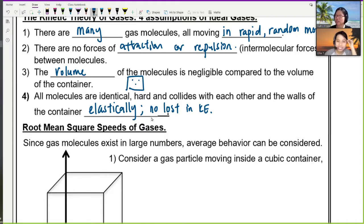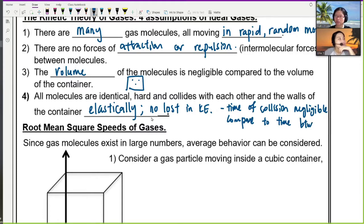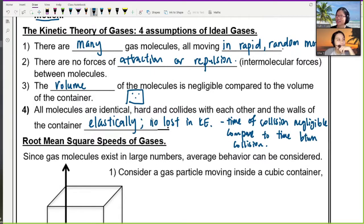And then there's another assumption that, although it's not within the four assumption, it's also important. The collision time, the time of collision, is negligible when you compare to the time between collision. And we will use this later for some derivation. So that's the four kinetic theory of gases. They normally will ask you to state or use this to explain. We will look at some past years later.